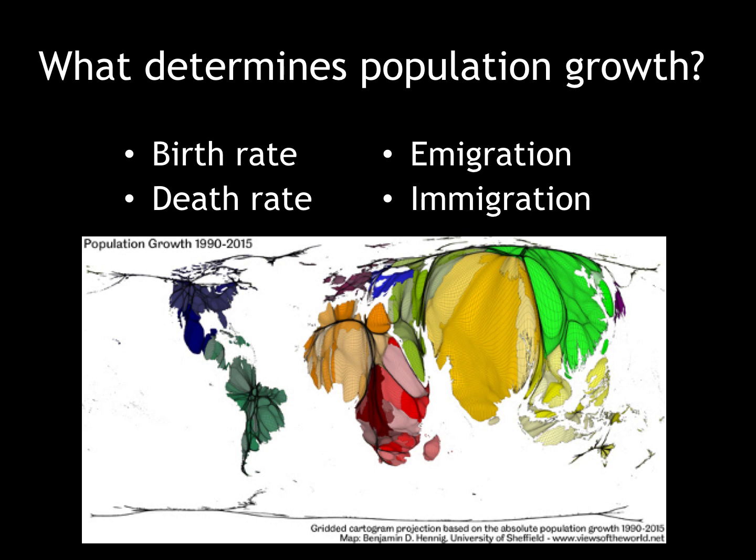What determines population growth? Population growth is determined by birth rate, death rate, emigration, or people leaving an area, and immigration, or people coming into an area.